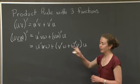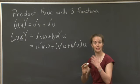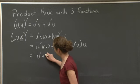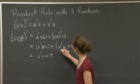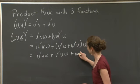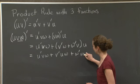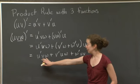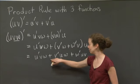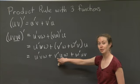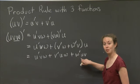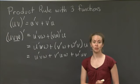I'm going to just expand and write it in a nice order, so we can see sort of exactly what happens. So u prime vw plus v prime uw plus w prime uv. So what you can see here is what happens. You take the derivative of the first function, you leave the second and third alone. Then you take the derivative of the second function, you leave the first and third alone. Then you take the derivative of the third function, you leave the first and second alone, and you add up those three terms.